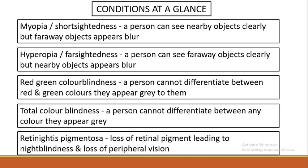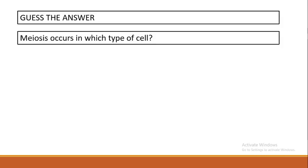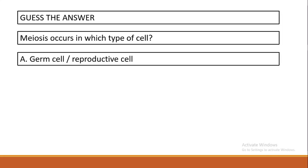Before we understand the detailed mechanism of crossing over, we need a basic question-answer round so we can easily understand what is coming ahead regarding crossing over. Take your paper and pen and start answering. First question: meiosis occurs in which type of cell? The answer is: meiosis occurs in germ cells, also called reproductive cells.